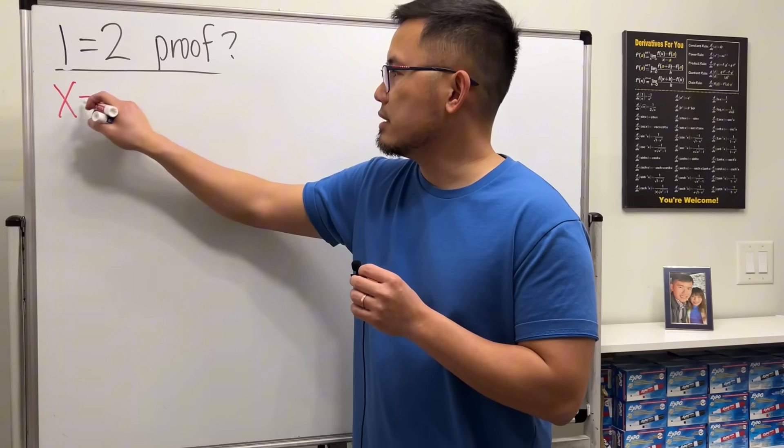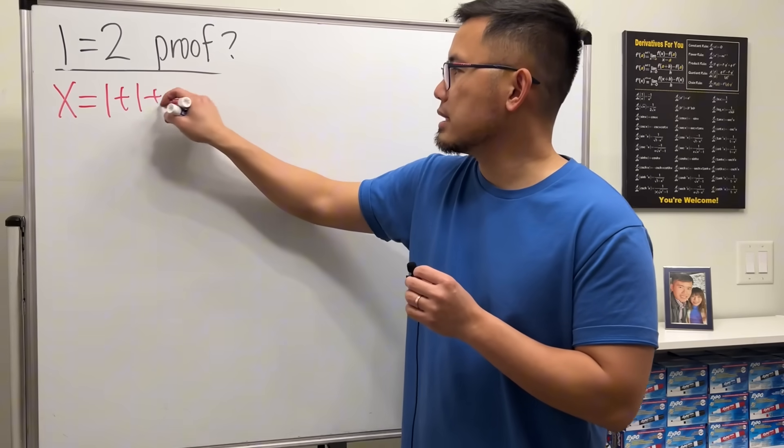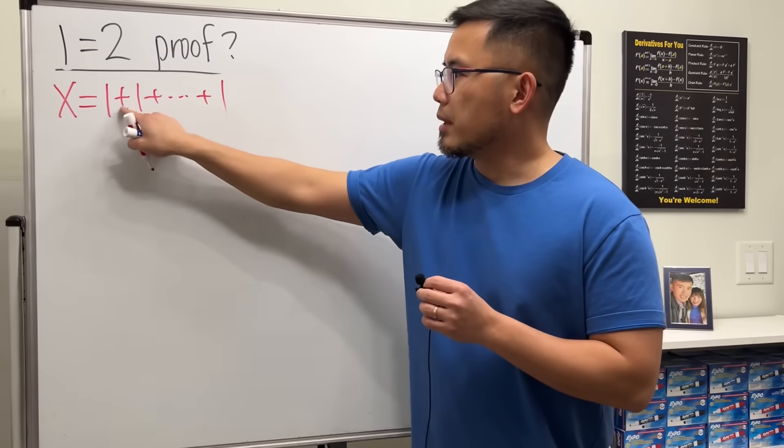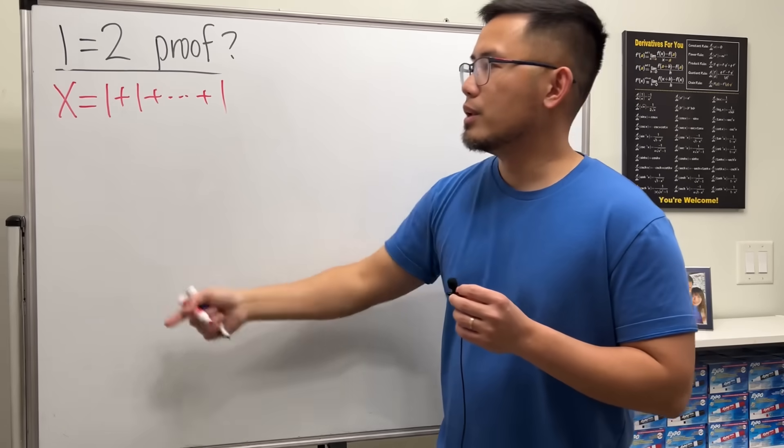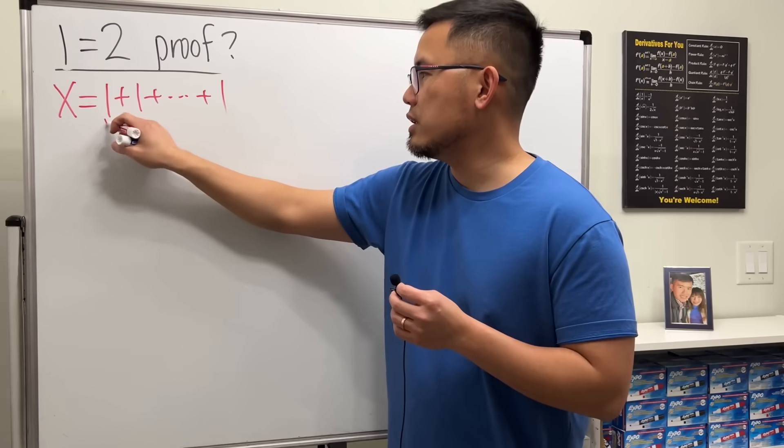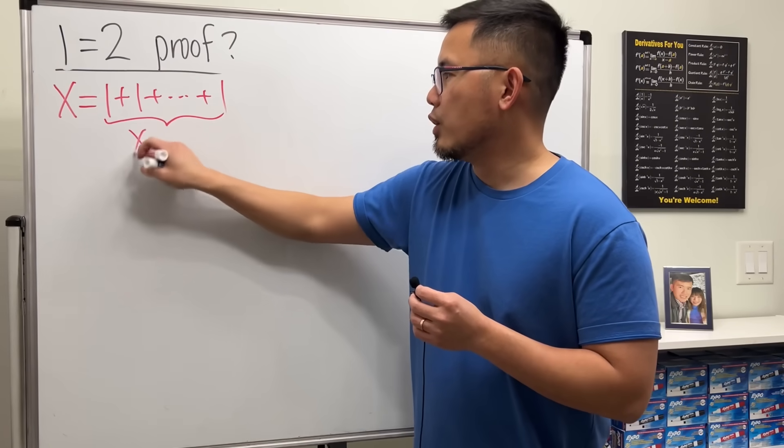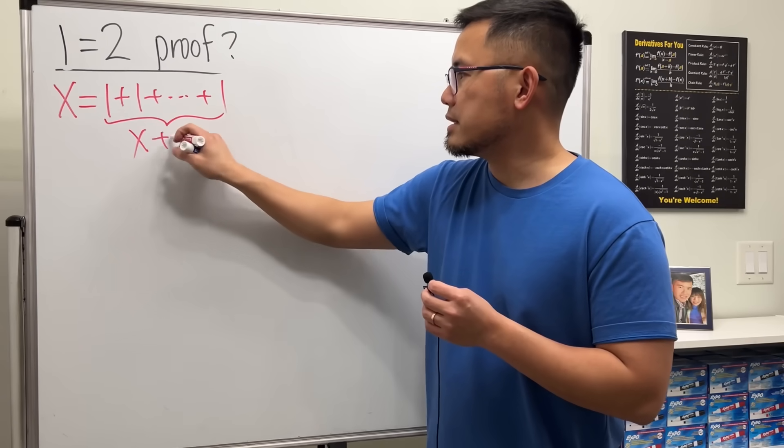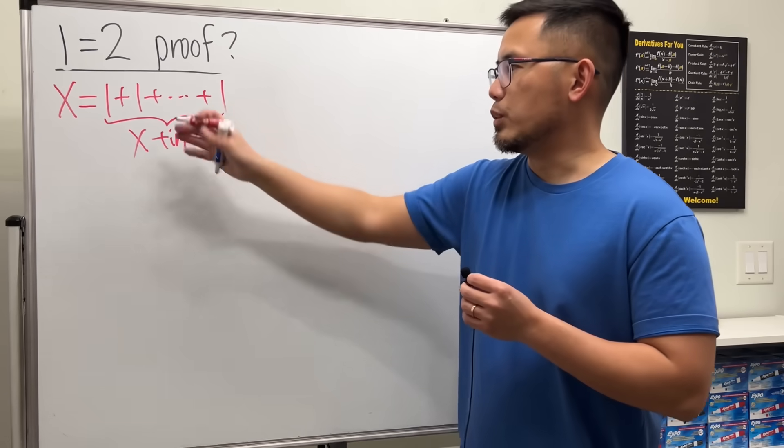Let's have a look. First, we are going to start off by saying X is equal to 1 plus 1 plus dot dot plus 1. Well, think about how many ones do we need? If I want to get to X, of course we need X many ones, right? So we put down 1 X times and then we just add them up together.